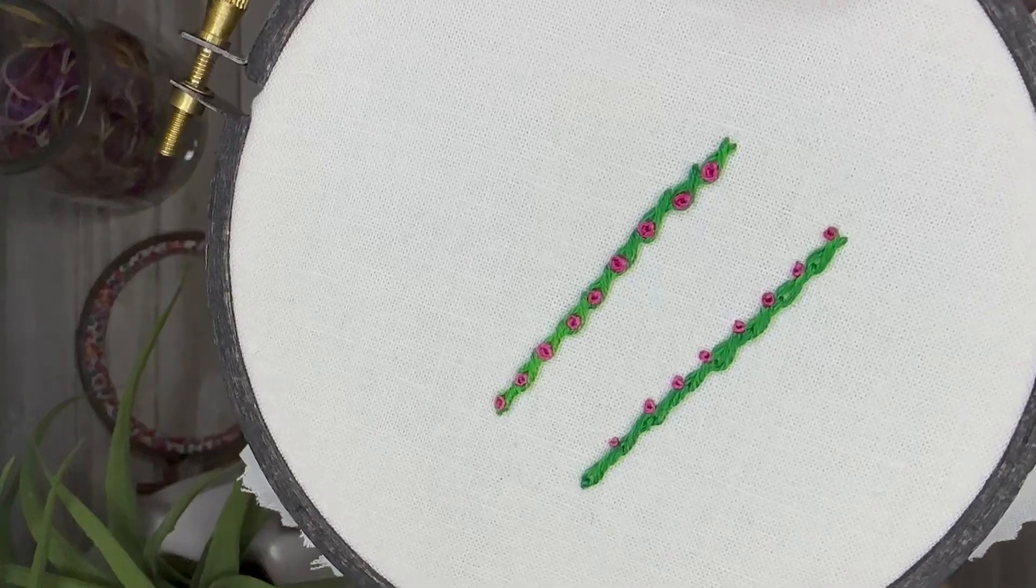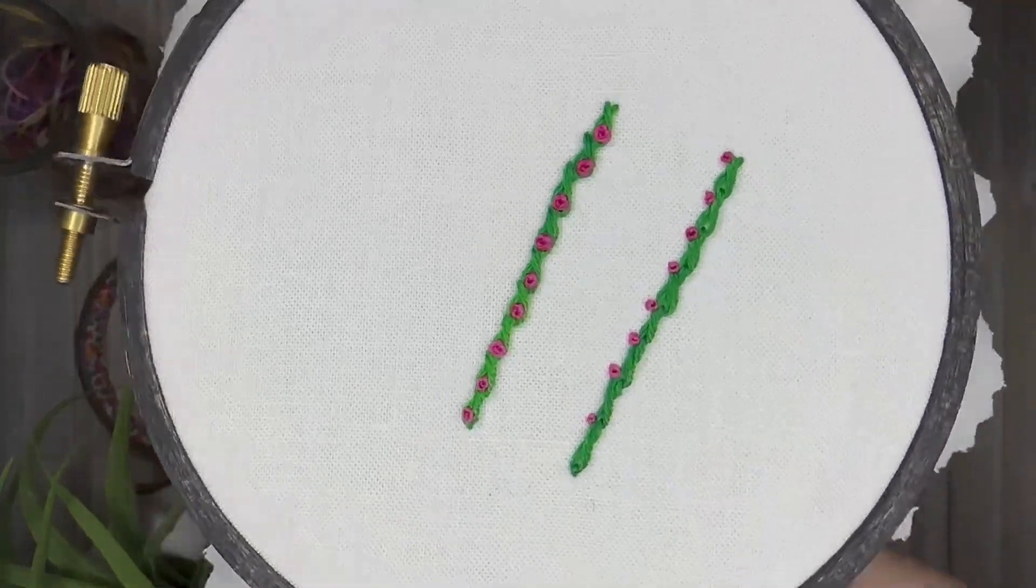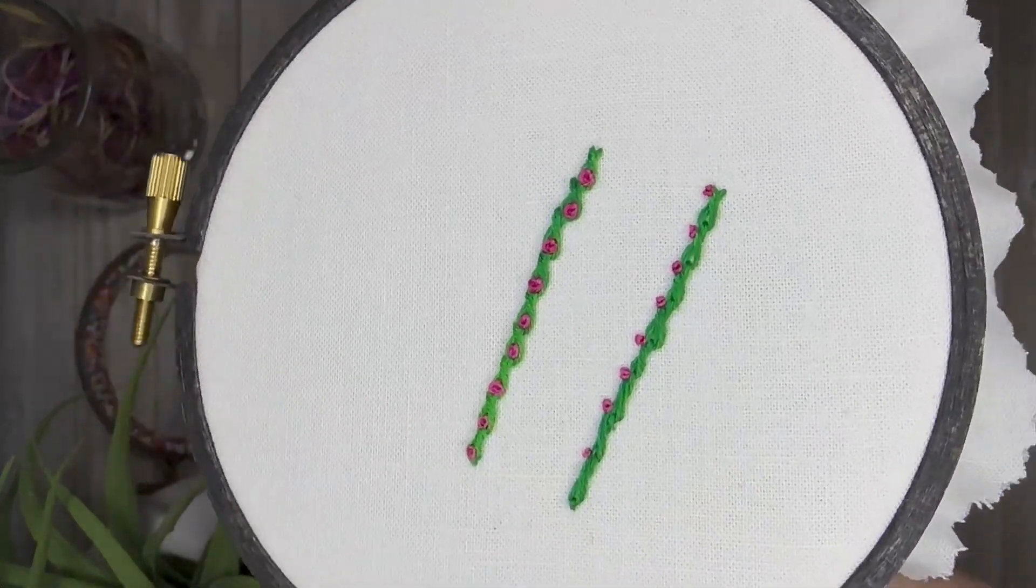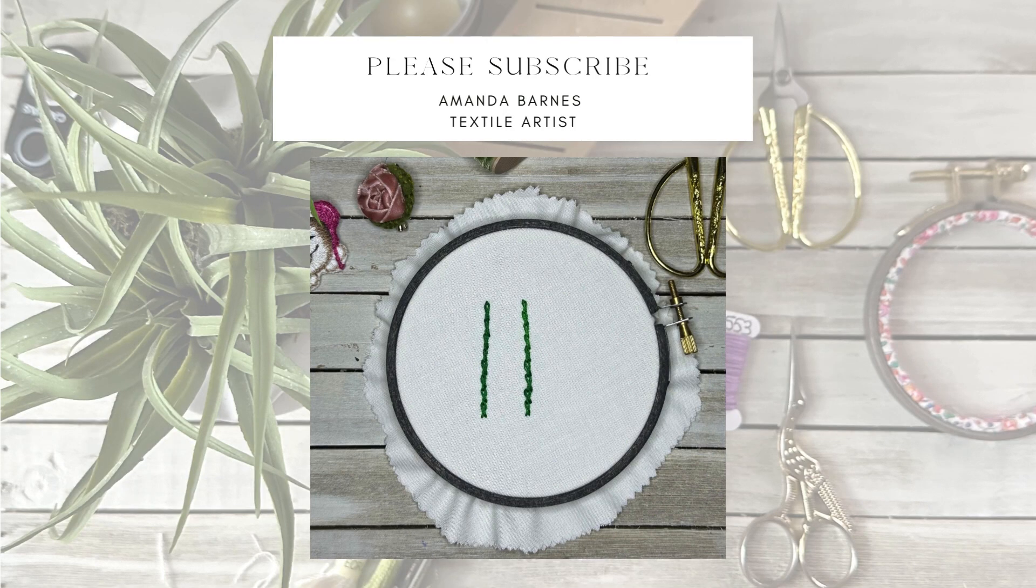You can elevate this by adding in some French knots on the top. In the example, the French knots are in the loops and in the one on the right there along the top. Happy stitching!